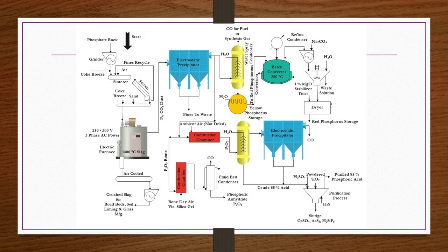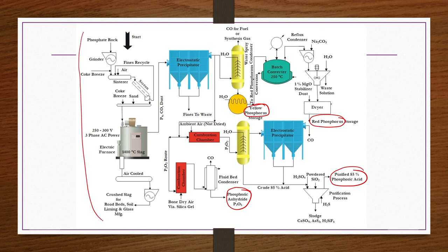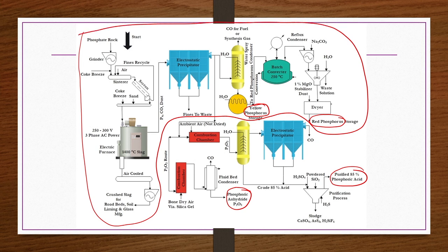The flow chart covers production of yellow phosphorus, red phosphorus, phosphoric anhydride P2O5, and purified phosphoric acid. The process begins with phosphate rock fluorapatite, which is crushed and ground in a grinder. Coke breeze — fine particles from the coking of coal — is then added, and this mixture is taken to a sinterer where sintering is done by adding some air.